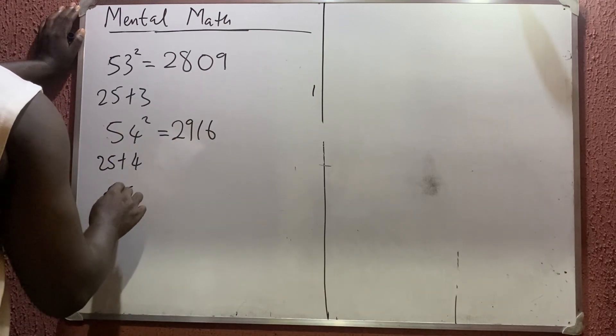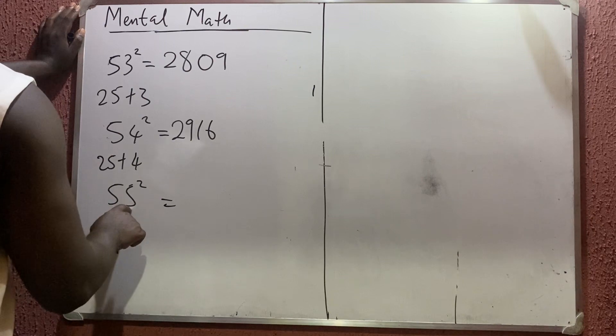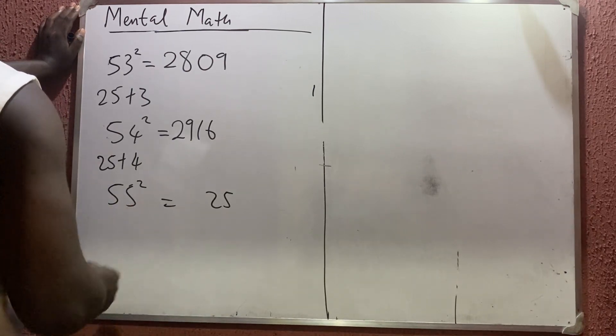55 squared. Let's go again. 5² is 25. It is a two-digit number, so I write it like that. 5² again is 25. 25 plus 5 is 30. That's the answer.